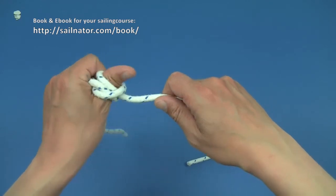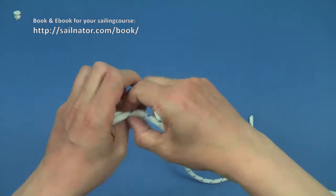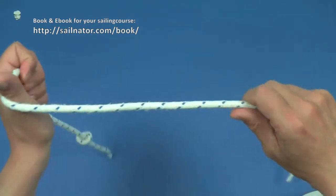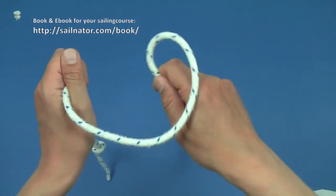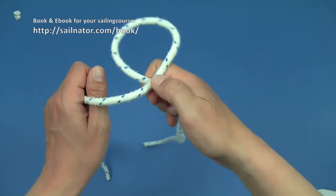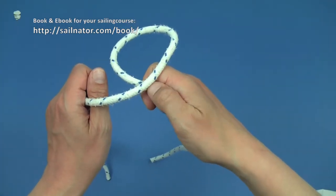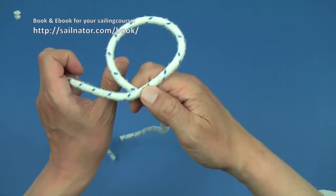I show how to throw the clove hitch once again. I turn the line into a loop where the moored part lies above the loose part of the line. I put the loop over the post and pull the boat towards me as close as possible.